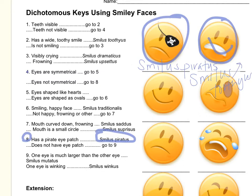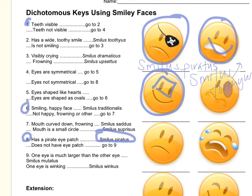Now let's try this guy. We have to always start at number one. Teeth visible — no. Teeth not visible — go to four. Eyes are symmetrical? Yes, they're the same size. That's what symmetrical means. Go to five. Eyes shaped like hearts? No. Eyes are shaped like ovals — yes, go to six. Smiling happy face? Yes, he is smiling. So this guy is Smilus traditionalist. He just looks like a smiley face. Smilus traditionalist — this is capitalized and this is lowercase.